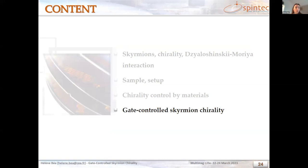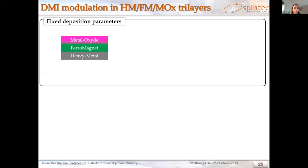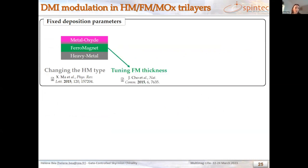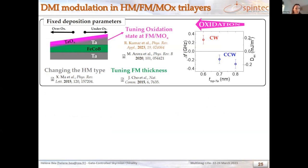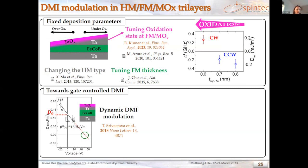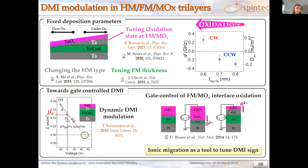We can try to apply a gate voltage to control chirality, since interfacial magnetism can be tuned this way. DMI can be tuned by changing the heavy metal, the ferromagnetic thickness, or the oxidation state. Previously, we observed that because DMI has an interfacial origin, a gate voltage can tune its amplitude. However, at that time we were not able to change its sign because the required voltages were too high. It is known in the literature that oxygen ions can be pushed and pulled by a gate voltage in some materials, making gate voltage a promising tool to tune DMI and skyrmion chirality.